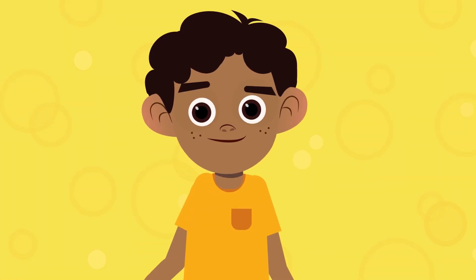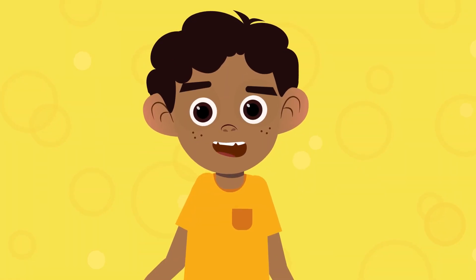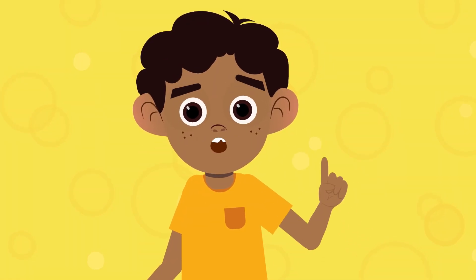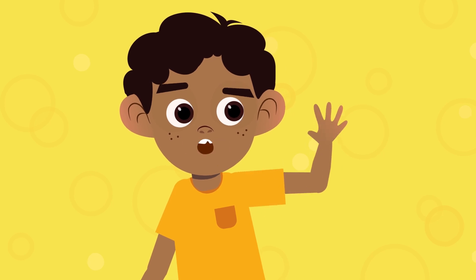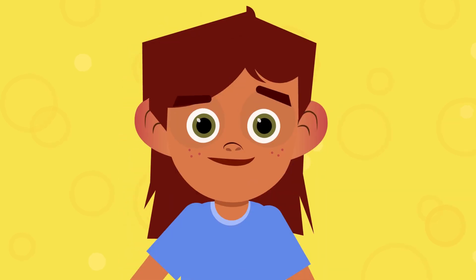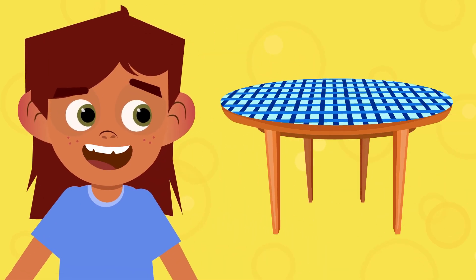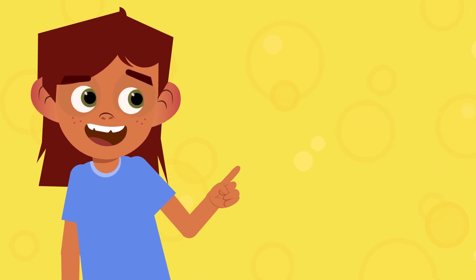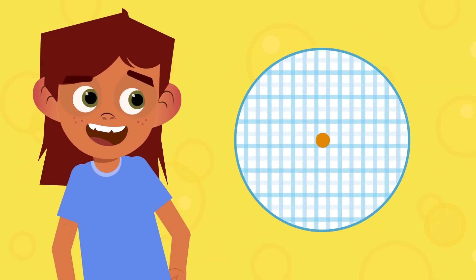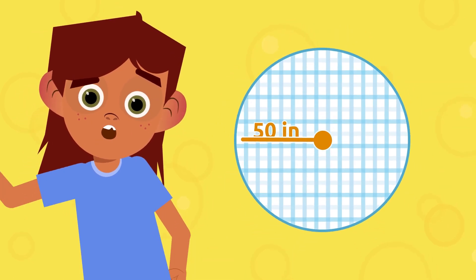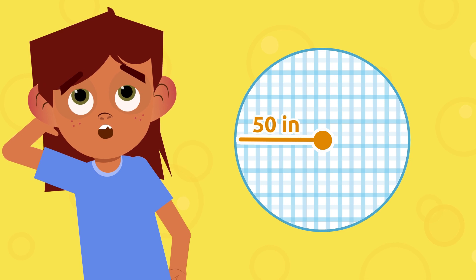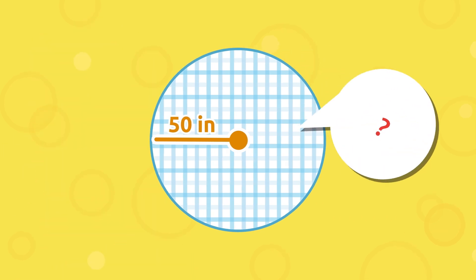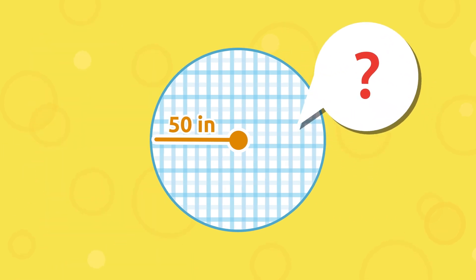It's very important to know how to measure the area of a circle. Let's look at an example. Anna wants to buy some fabric to make a new tablecloth. The table is round and its radius measures 50 inches. How much fabric will she need for the table?